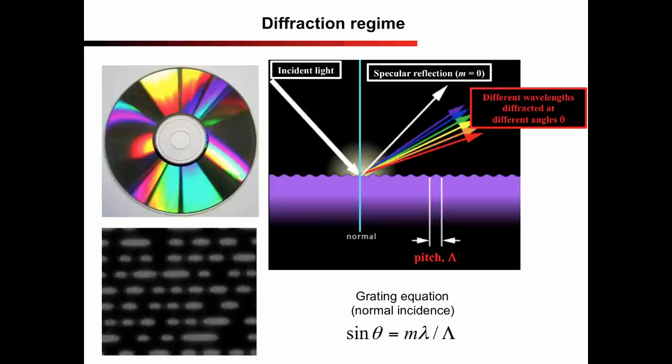Different wavelengths are diffracted under different angles. The angles can easily be calculated from the grating equation, which is written here in its simplest form, that is for direction of illumination perpendicular to the grating surface.